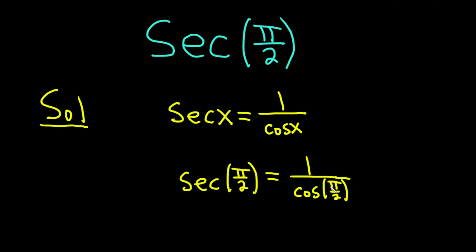However, the cosine of π/2 is equal to 0, so this is 1 over 0. This doesn't make sense, so the answer is actually undefined.